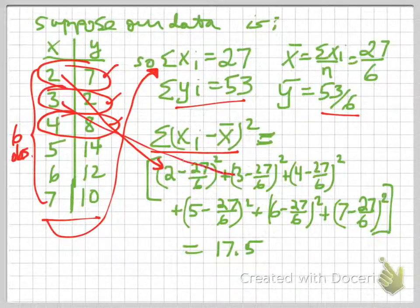Then we have 3 minus 27 over 6, squared. Then 4 minus 27 over 6, squared. Then 5 minus 27 over 6, squared. 6 minus 27 over 6, squared. And 7 minus 27 over 6, squared.